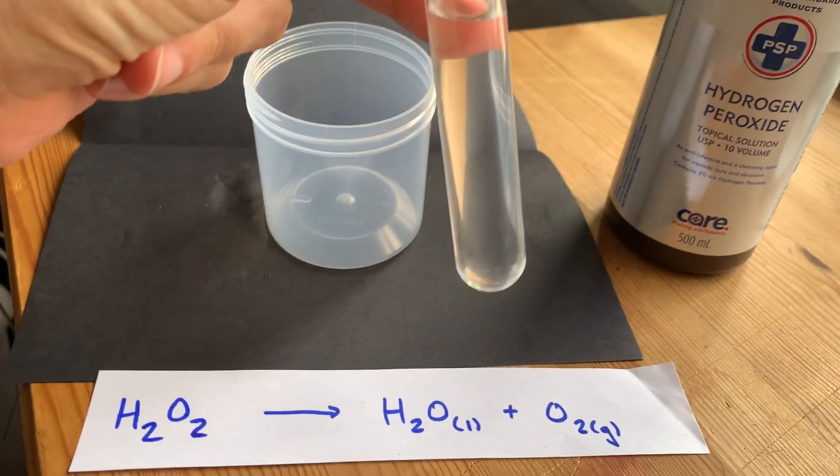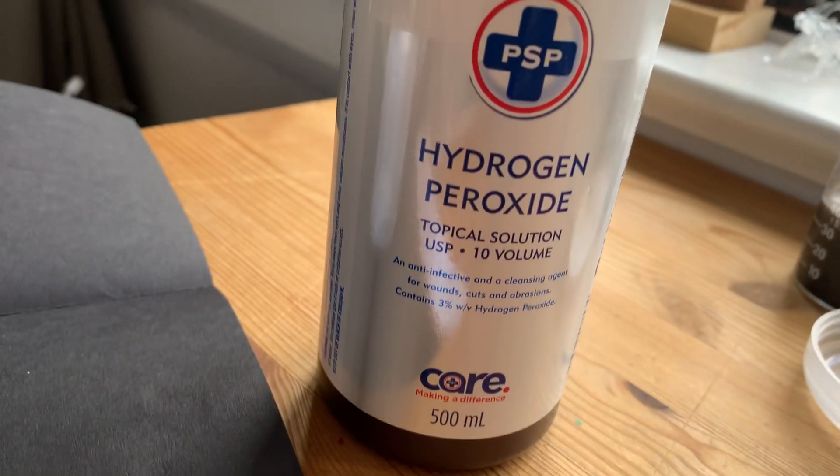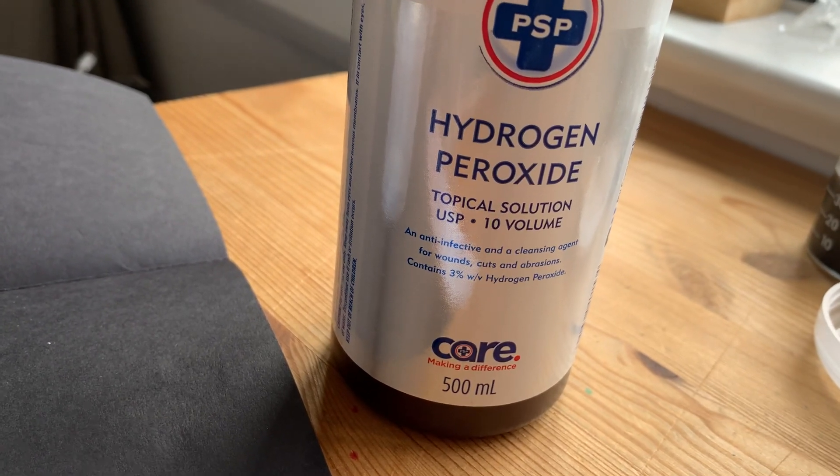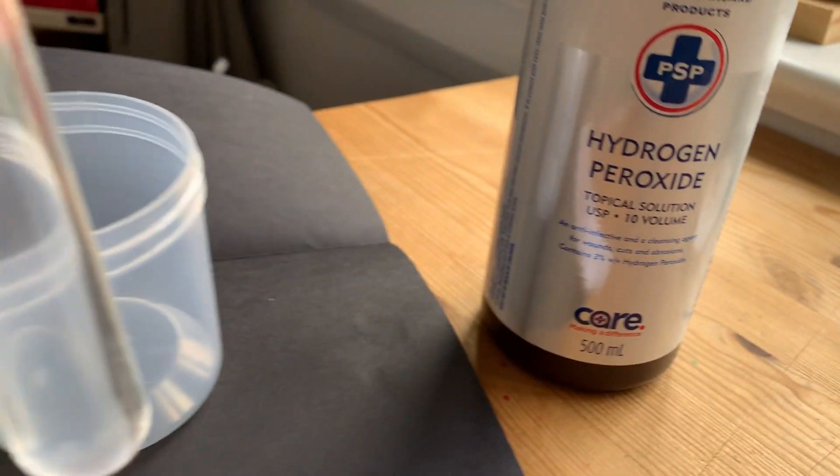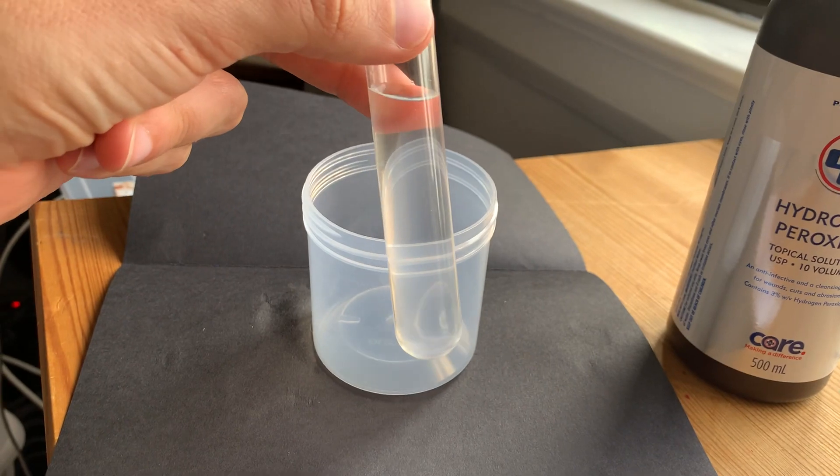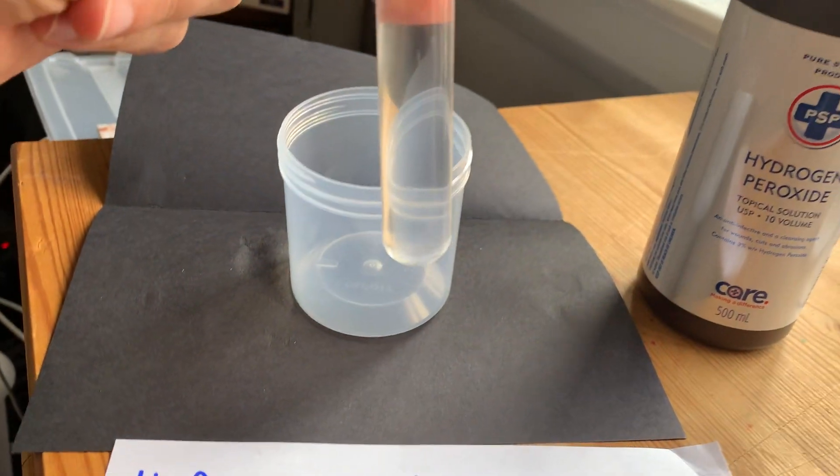In this test tube, I have hydrogen peroxide that I got out of this container. It says 3% weight by volume, which means there's 3 grams of hydrogen peroxide in every 100 milliliters of solution.